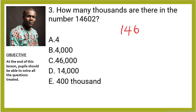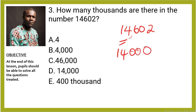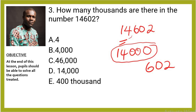Question 3: How many thousands are there in the number 14,602? From the way you read it, you know how many thousands you have. If I break it up, we have 14,000 — so how many thousands are there? 14. The answer is 14 thousands.